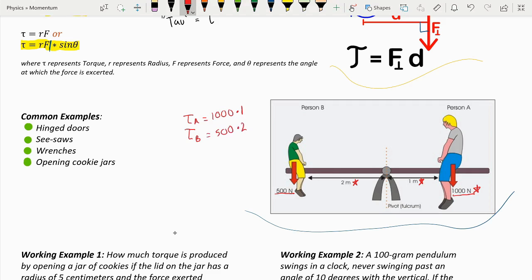and you multiply that by 2 meters. So both of them equal 1,000 newton meters. Therefore, it would be balanced torque at the pivot.